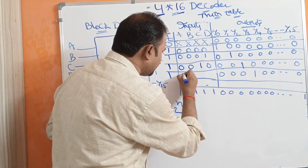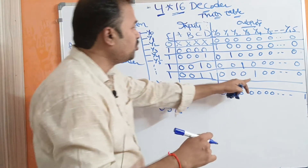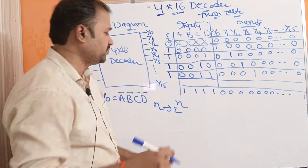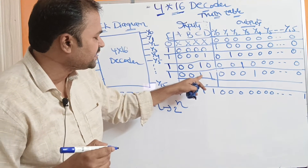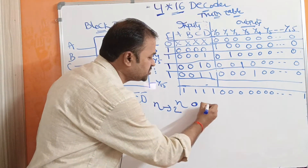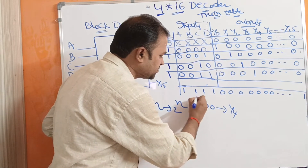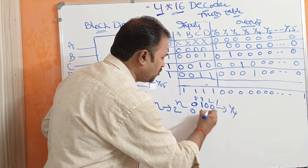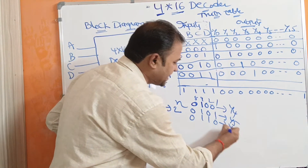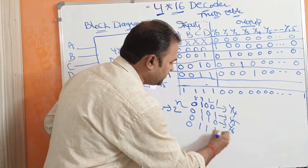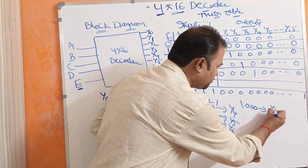When the input is 0011 — decimal 3 — the decoder's output Y3 is active, whereas remaining outputs are inactive. If the inputs are 0100, then Y4 is active. If the inputs are 0101, then decoder's output Y5 is active. If the inputs are 0110, then Y6 is active. If the inputs are 0111, then the decoder's output Y7 is active. If the input is 1000, then the decoder's output Y8 is active.